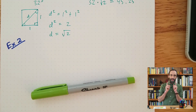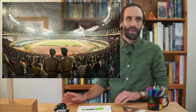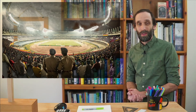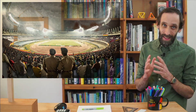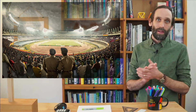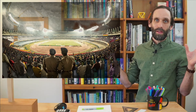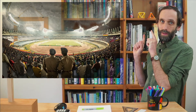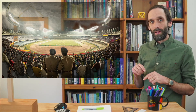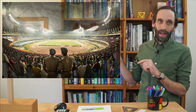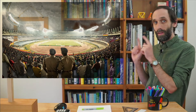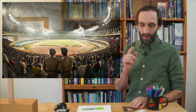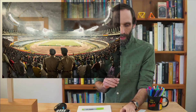Now we're going to go on to the second example. I'd like to show you a picture first. This is a photograph I took at the Salt Lake Stadium in Kolkata, India — a big stadium where soccer games are played. What I thought we could do is find the length of the diagonal of the soccer field of this stadium in Kolkata.